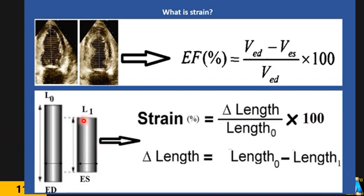In longitudinal strain, you are measuring length. Since the definition of strain means stretching, we expect strain to be positive because it is stretched and becomes elongated. But in the heart during systole, the length of the wall or segment decreases. So for longitudinal strain, we give a negative value — about minus 18, or usually minus 20 percent. For radial strain, the wall becomes thicker, which follows the same direction as the definition of strain, so radial strain is positive.